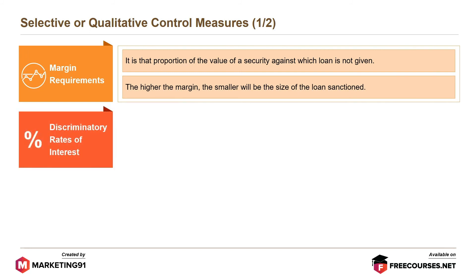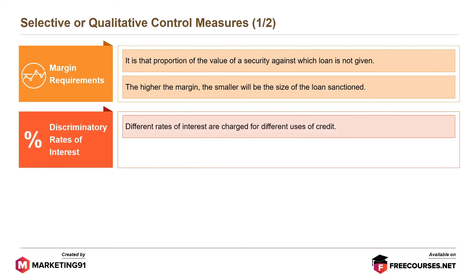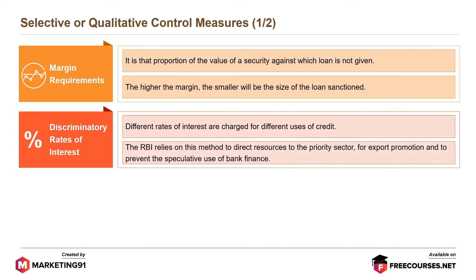Discriminatory rates of interest: different rates of interest are charged for different uses of credit. The RBI relies on this method to direct resources to the priority sector for export promotion and to prevent the speculative use of bank finance.